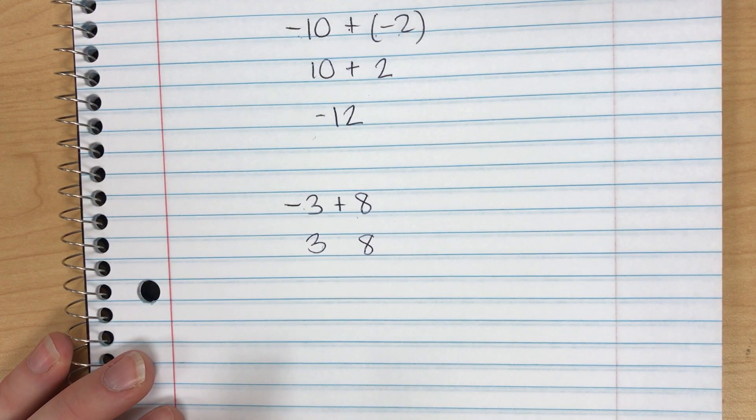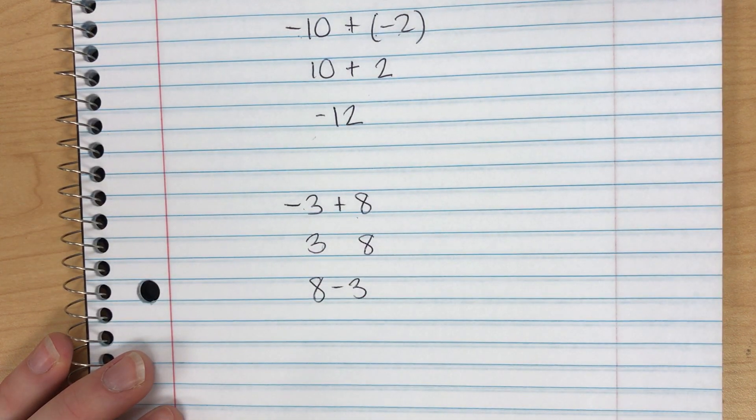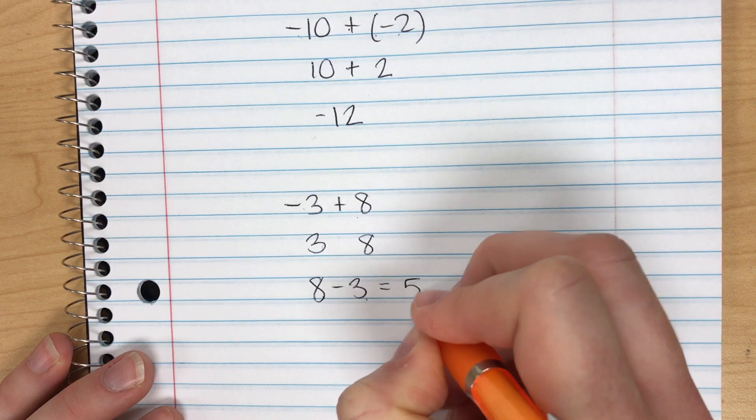Next I'm going to subtract the lowest from the highest. My highest absolute value is 8. I'm going to subtract 3. 8 minus 3 is 5.